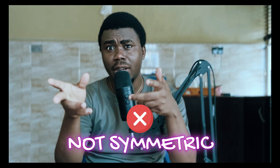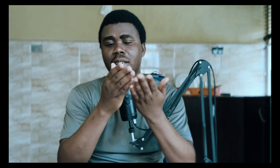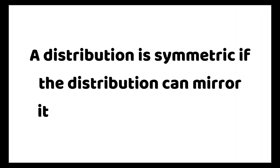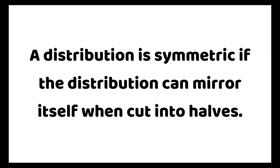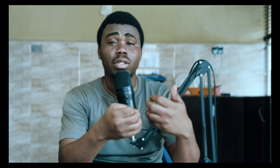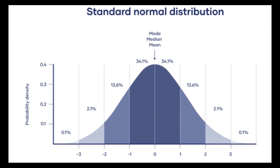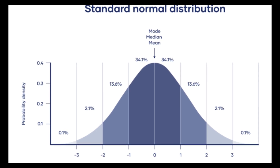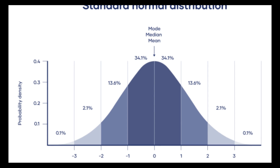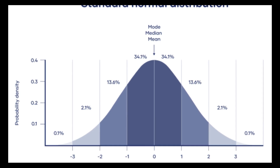Skewness is the measure of the asymmetric property of a distribution. When something is asymmetric it simply means it is not symmetric. A distribution is said to be symmetric if, when we cut that distribution into halves, one half mirrors the other — meaning the left-hand side mirrors the right-hand side. One of the most popular examples of a symmetric distribution is the normal distribution. If you divide the normal distribution from the center at zero, the left half mirrors the right half.